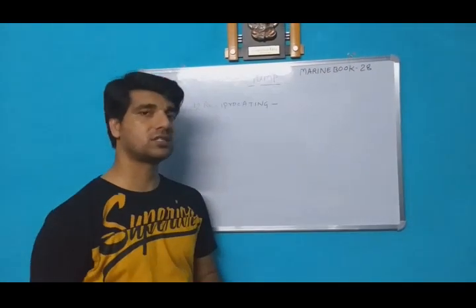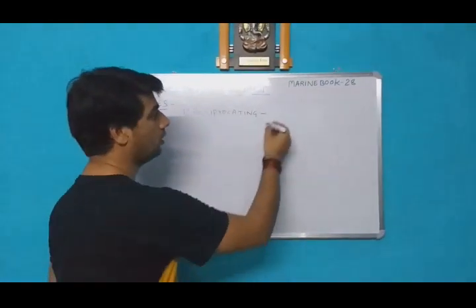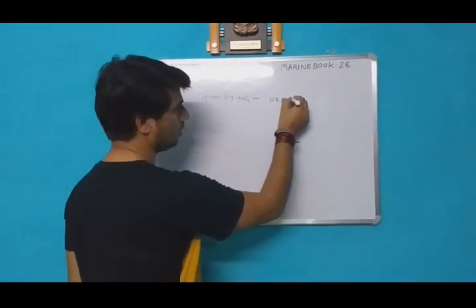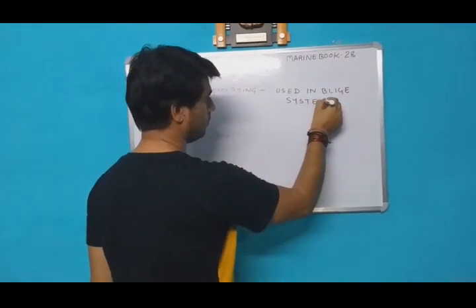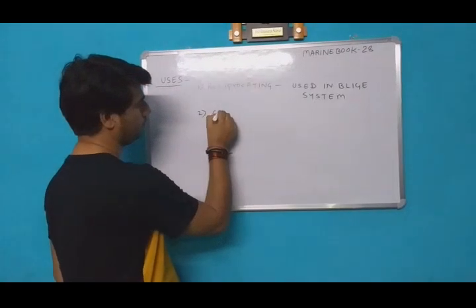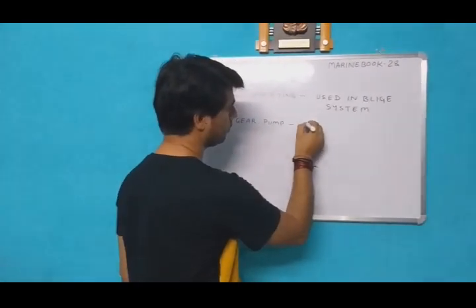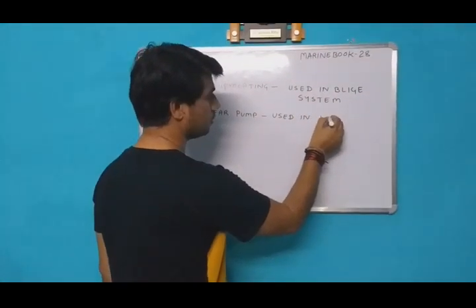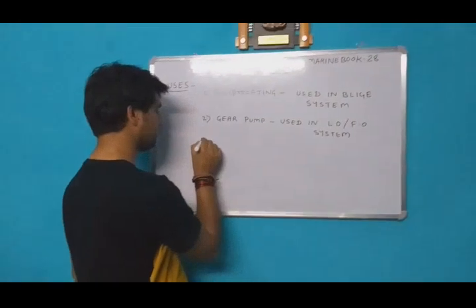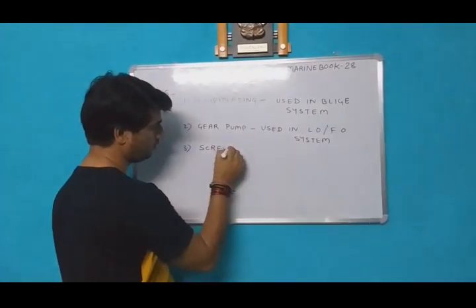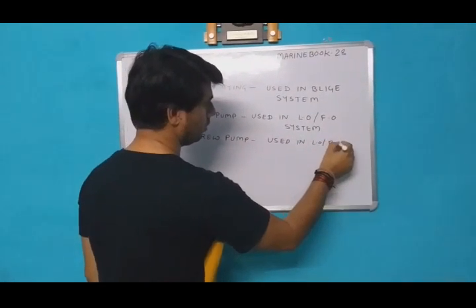The reciprocating pump is always used on board in the bilge system. So reciprocating pump is used in the bilge system. Number two, the gear pump is always used for the oil system — used in lubricating oil or fuel oil system. Number three, the screw pump is also used in the lubricating oil or fuel oil system.